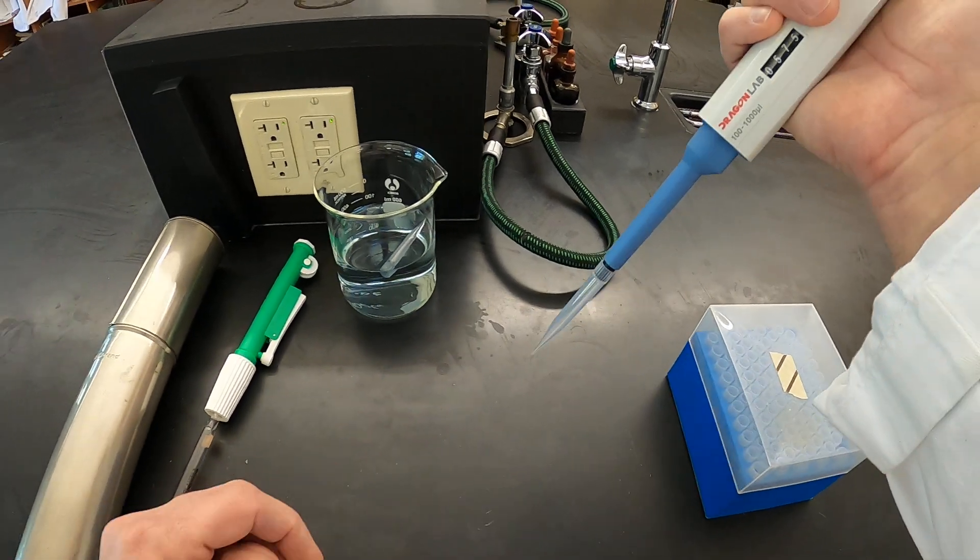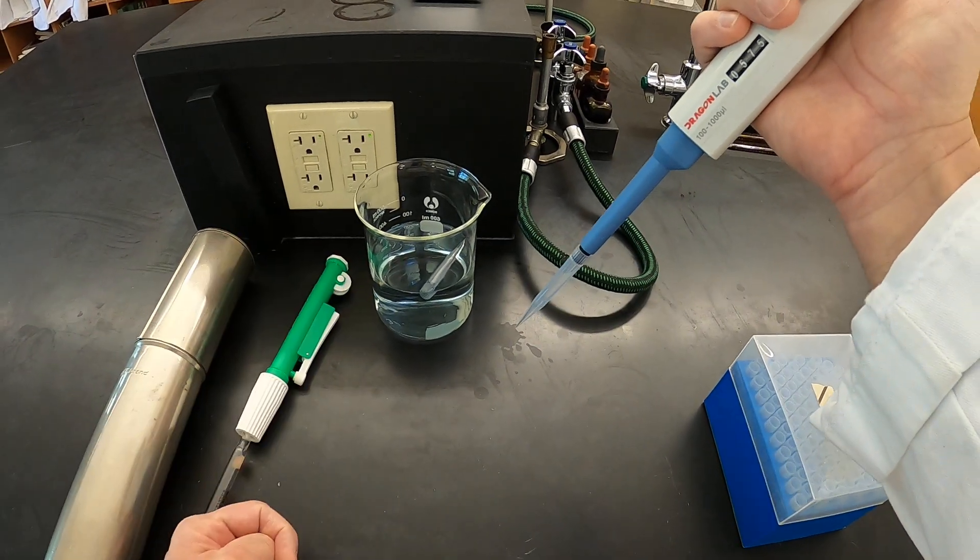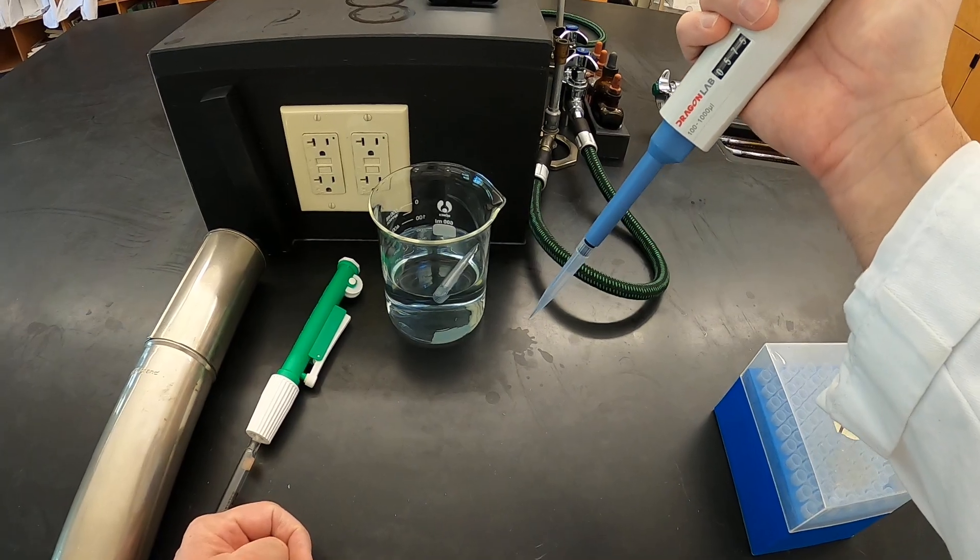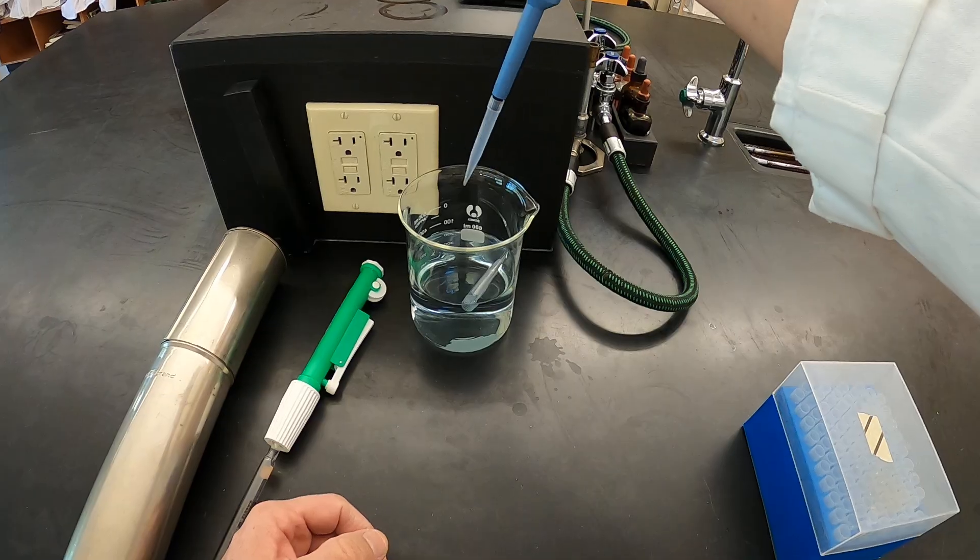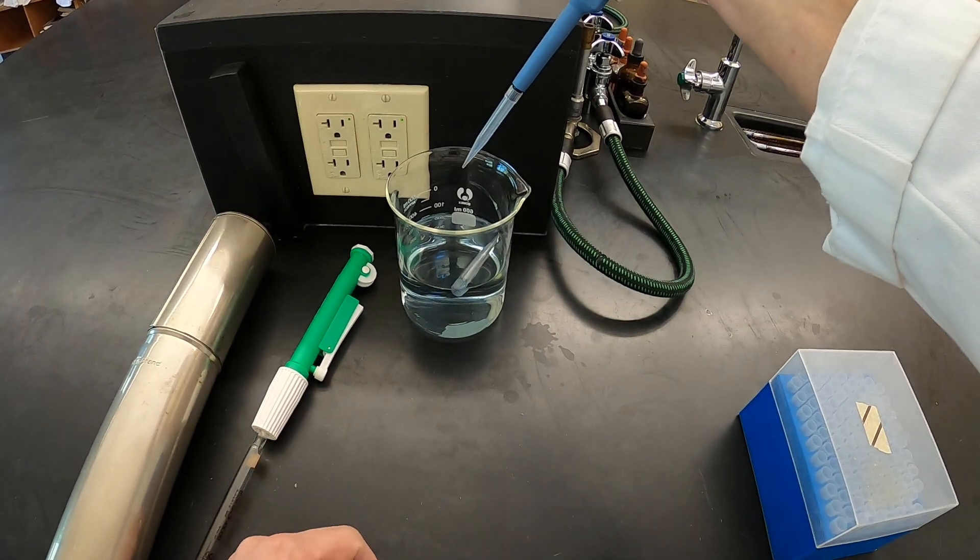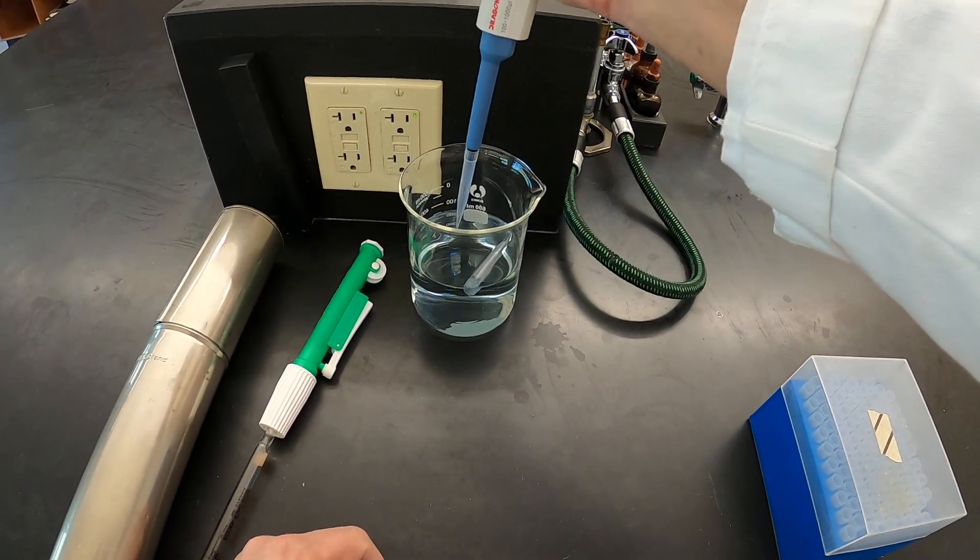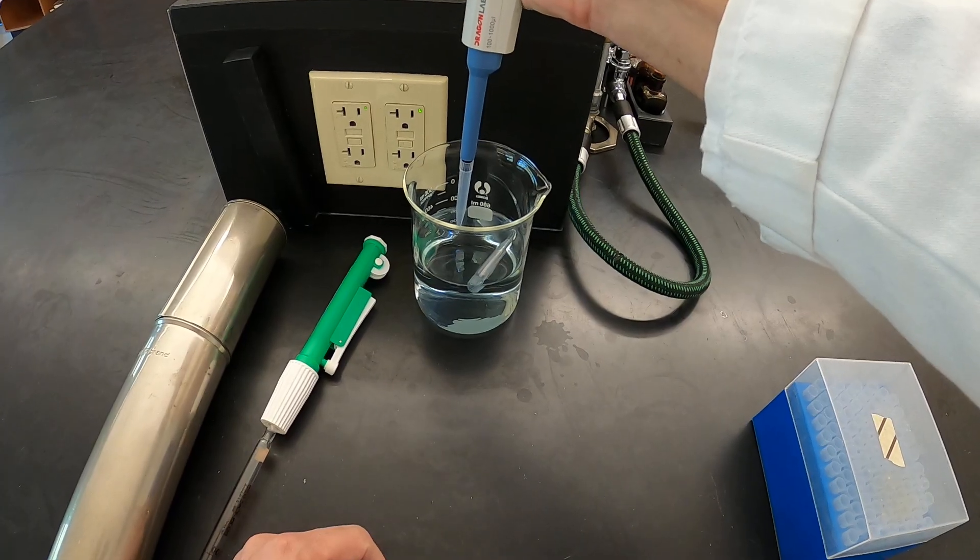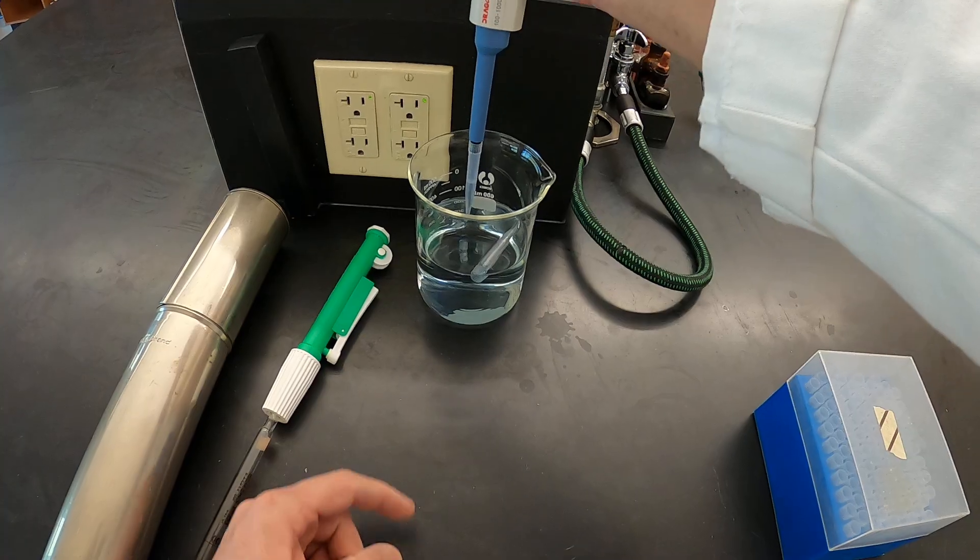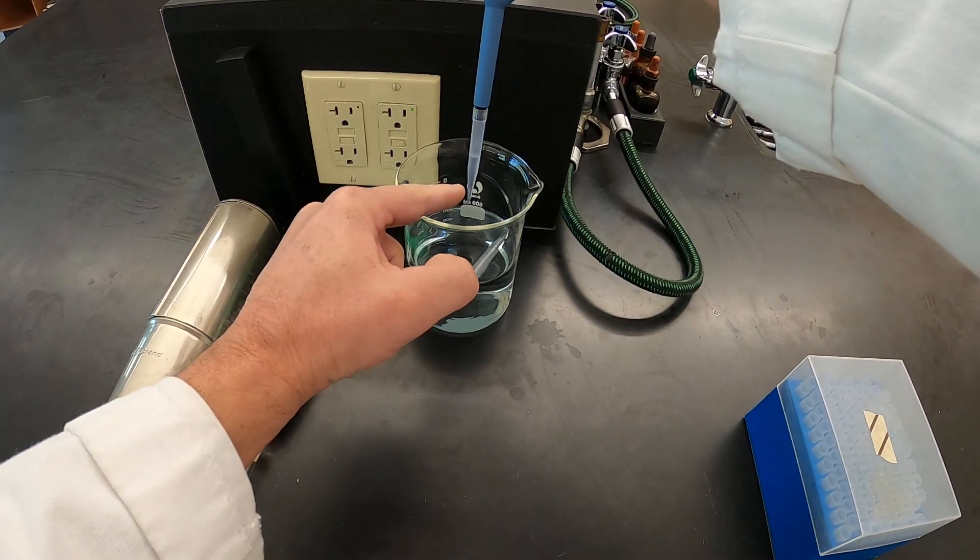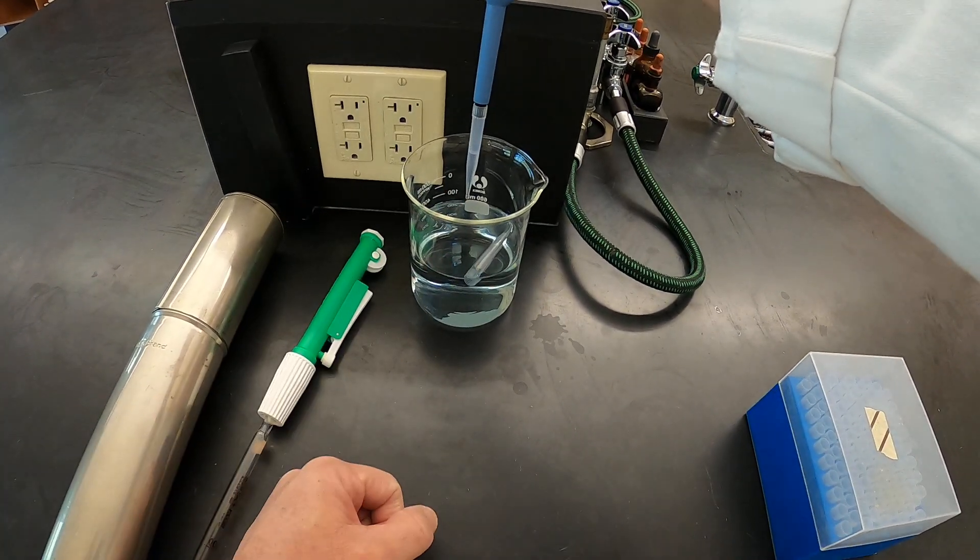So we can move the box out of the way. Let's practice here for just a second. If I was wanting to suck up 575 microliters of liquid, I would press the plunger down to the first stop. I would stick it into the liquid and then release the plunger slowly. And that is 575 microliters of liquid right there.